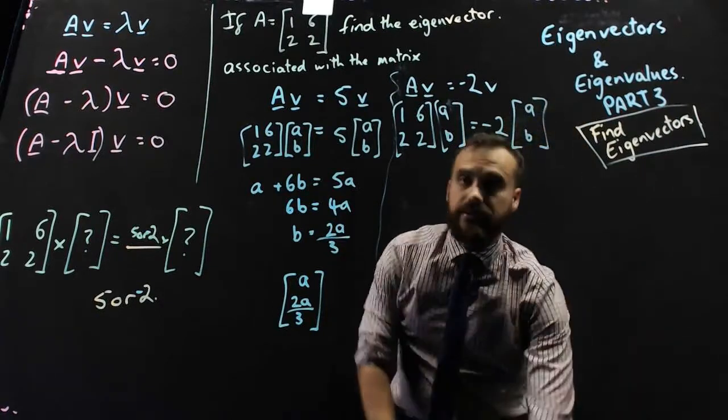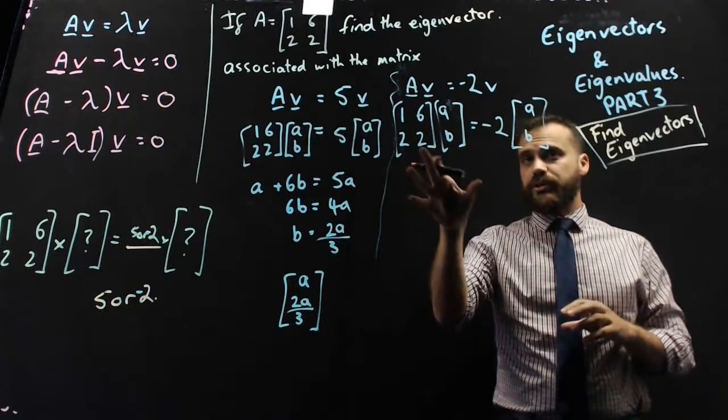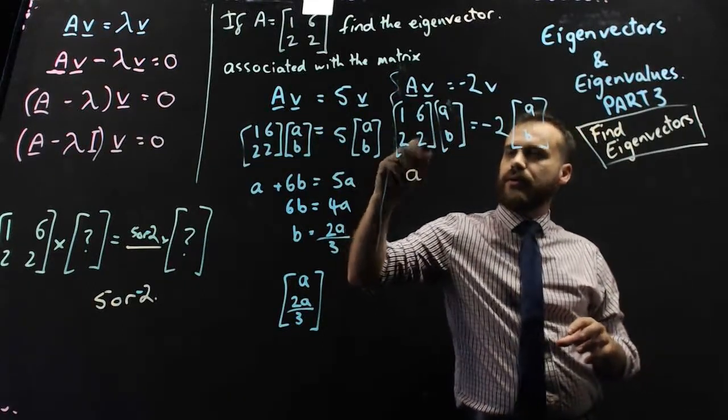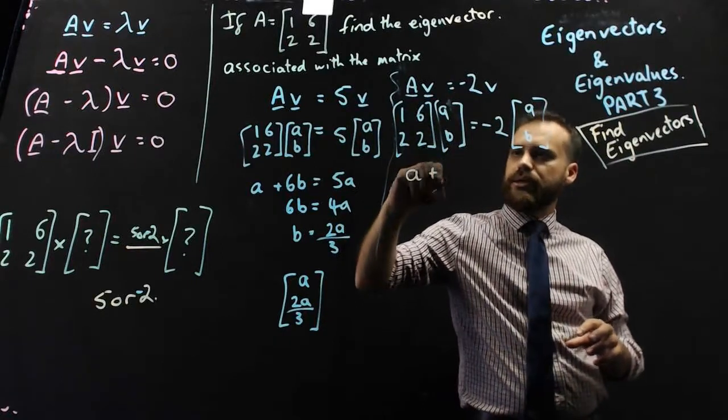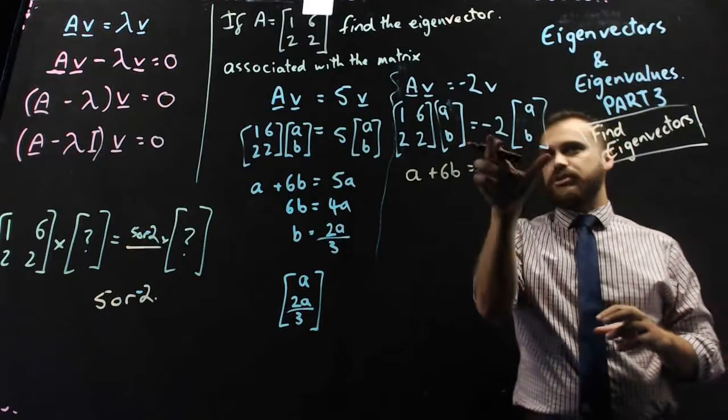So again, we consider the first element when we multiply the left and when we multiply the right, so that's going to be 1 times a plus 6 times b, and the first element on the right is just going to be negative 2a.